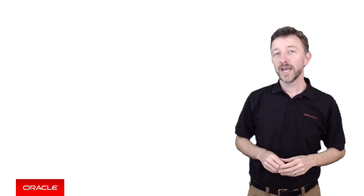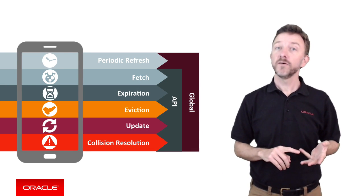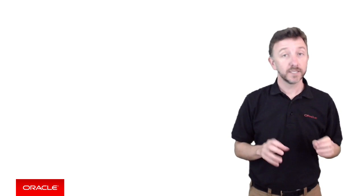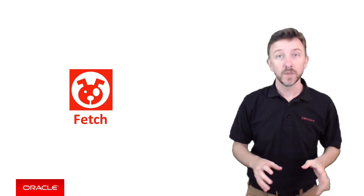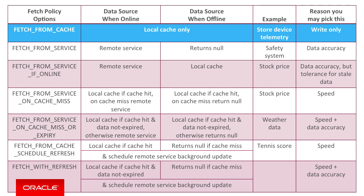Now we understand where we can set the sync policies. Let's look at the sync policy options in detail: periodic refresh, fetch, expiration or eviction, update, and collision detection. Starting with the fetch sync policy — the fetch from cache option always fetches data from the local cache regardless of whether the device is online or offline. This is useful where your device is capturing telemetry data that it's responsible for generating and flushing to the server, but would never re-read in its raw form — the cache is a data dump in this case.